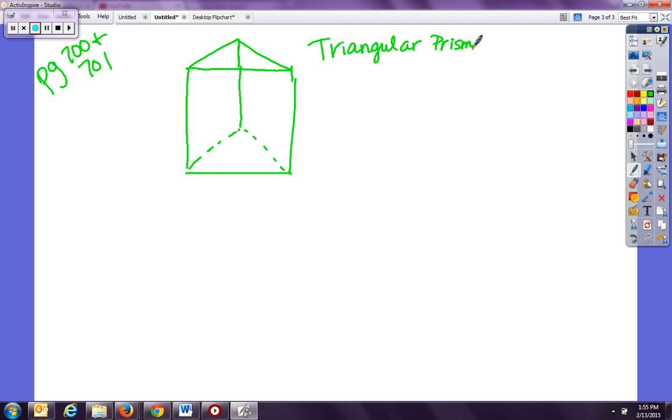So the volume of a triangular prism. So it gives us this formula: V equals big B times H. Well we now know that the big B represents the area of the base.